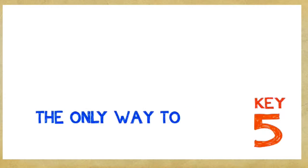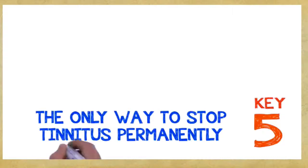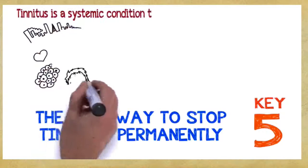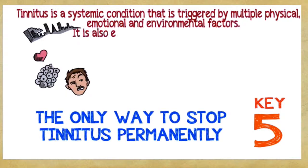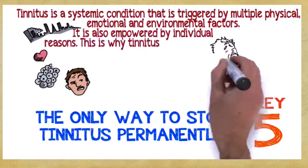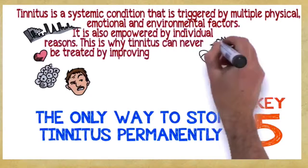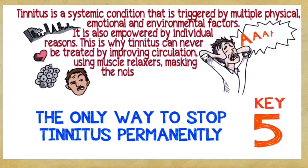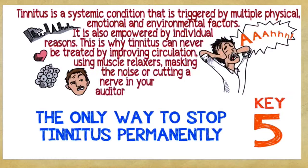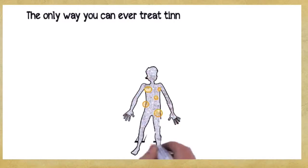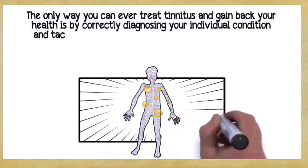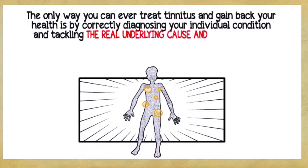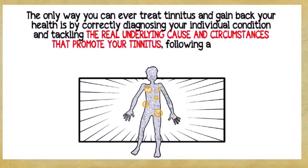Key number five. The only way to stop tinnitus permanently. Tinnitus is a systemic condition that is triggered by multiple physical, emotional, and environmental factors. It's also empowered by individual reasons. This is why tinnitus can never be treated by improving circulation, using muscle relaxers, masking the noise, or cutting a nerve in your auditory system. The only way you can ever treat tinnitus and gain back your health is by correctly diagnosing your individual condition and tackling the real underlying cause and circumstances that promotes your tinnitus, following a complete, multi-dimensional, holistic program.